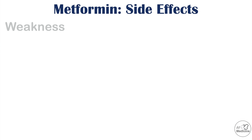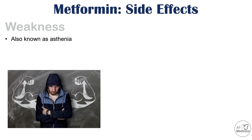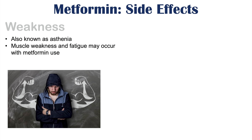Other side effects of metformin include weakness, also known as asthenia — muscle weakness and fatigue may occur. This can be directly related to metformin, but could also be related to other side effects such as vitamin B12 deficiency-associated anemia, which can itself lead to fatigue.